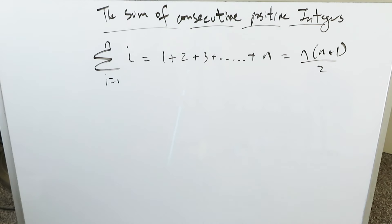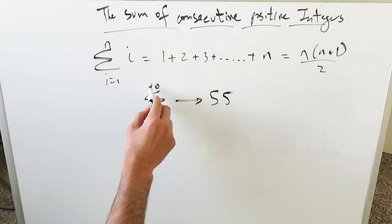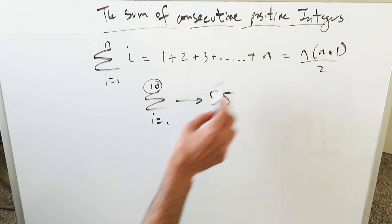If you have a given value and you want to determine the sum of all the positive consecutive integers up to that, this is your formula. Look at this: i equals 1 up to 10. This representation will give you a value of 55 because you would take this n value here and run it through that formula.